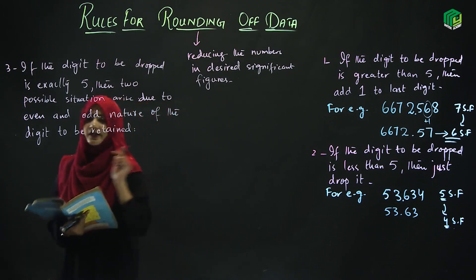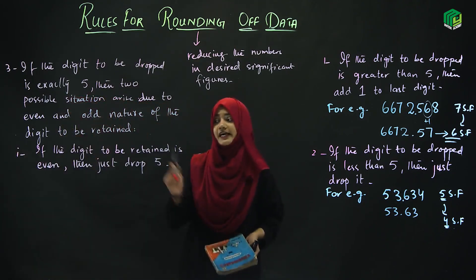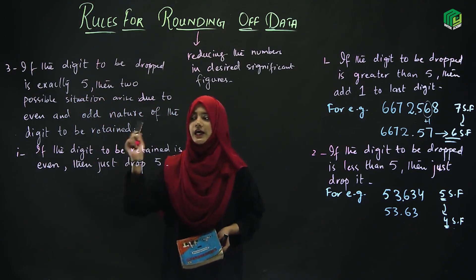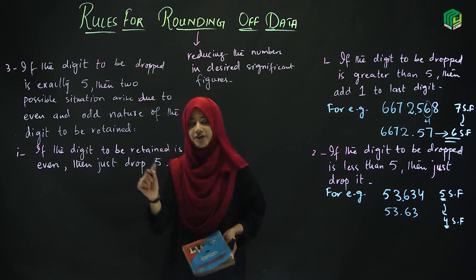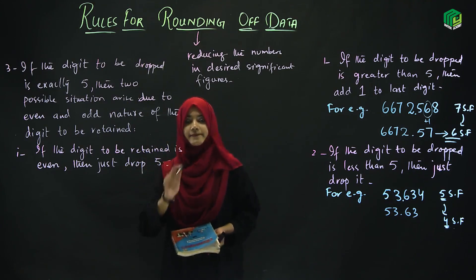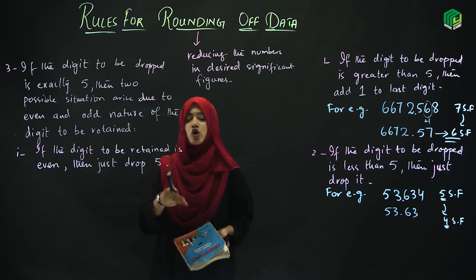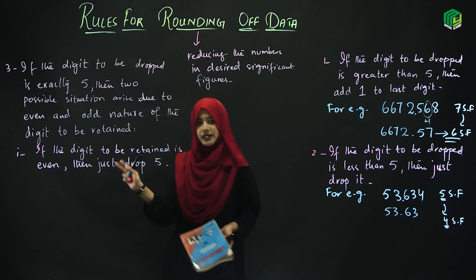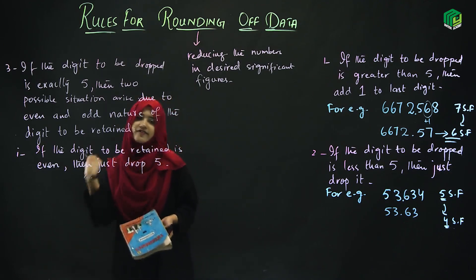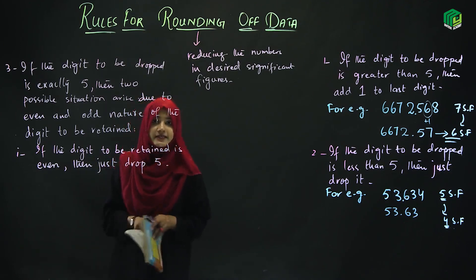First possibility is that it is even. If the digit after 5 is even, it will remain retained, it will remain even. So what do you have to do? You have to drop 5, no doubt. The 5 will just drop.